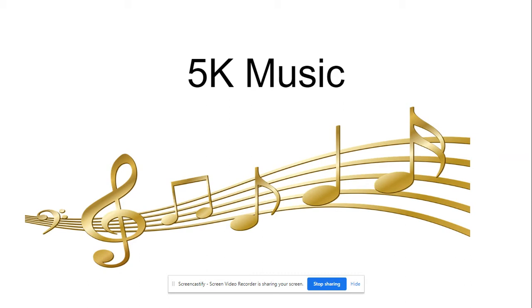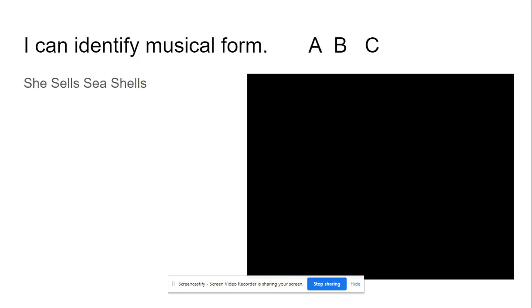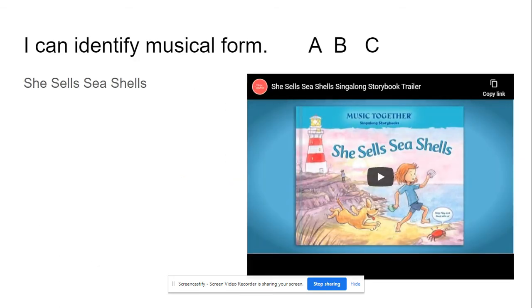You should have had a chance to look at the book and listen to the song that I linked before this activity. If you didn't get a chance to do that, you might want to go back and do that. But if not, let's continue on. There's the name and the book that you could have listened to. We're going to identify some musical form today.